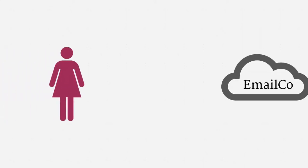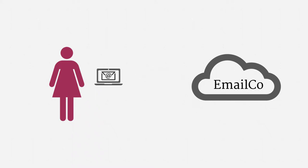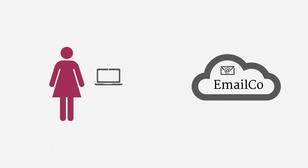Let's suppose that Alice has an account with a particular email company — I've just gone with EmailCo. One thing Alice might do is log into her email account. Her access might be through a website, or it might be through a mail app. Alice might also draft an email, and she might save that draft on EmailCo's servers. Eventually, she'll send that email off to its recipients. Alice also receives her email through EmailCo. When a message arrives, it lands on EmailCo's servers, where it's saved in her inbox.